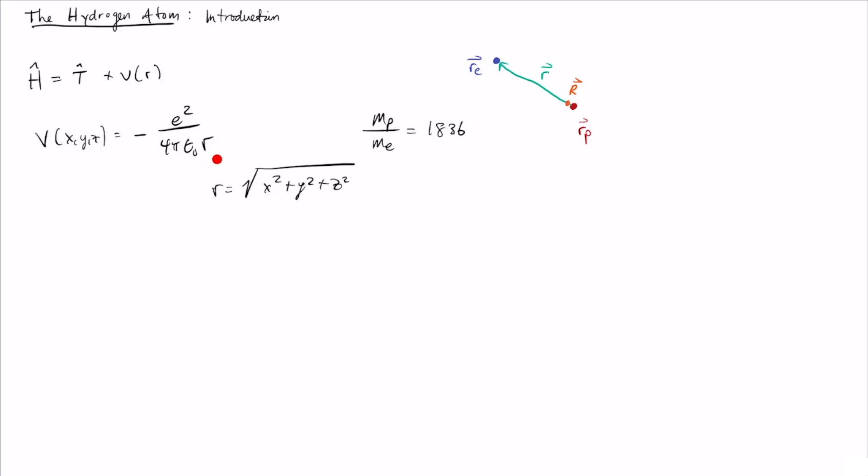This 4πε₀ over r is part of the Coulomb force, part of writing out the Coulomb force in SI units. So this ε₀ is called the permittivity or the vacuum permittivity, and this is how you convert the charges and a distance into an energy.